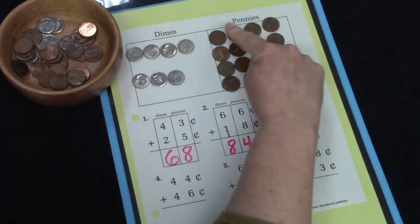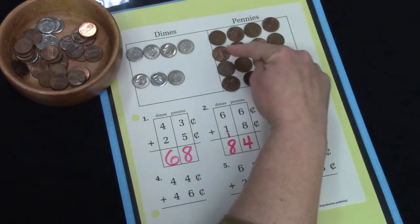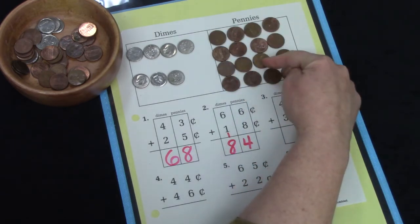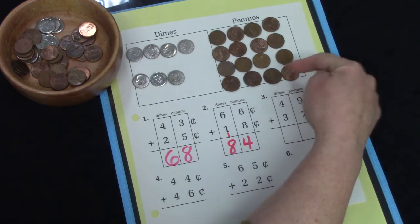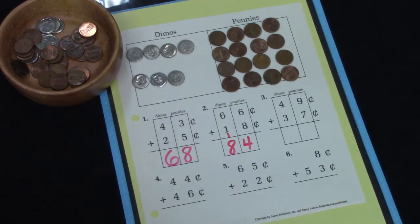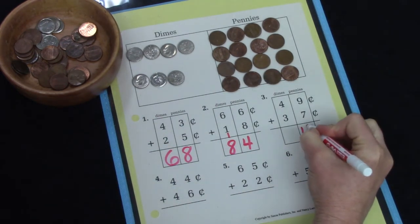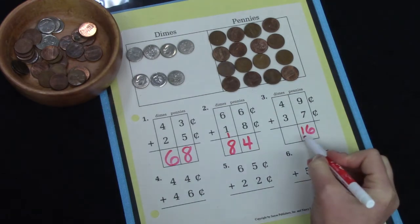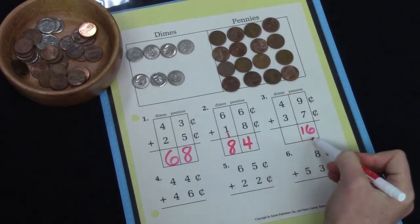Or we could just count all of them: 1, 2, 3, 4, 5, 6, 7, 8, 9, 10, 11, 12, 13, 14, 15, 16. Well, we cannot put 16, the number 16 in this column because there's 2 digits. And we can only put 1 digit.